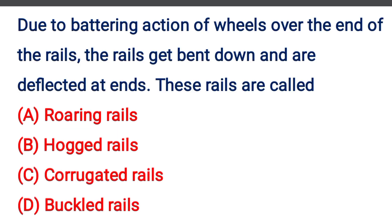Next question: Due to battering action of the wheel over the end of the rails, the rails get bent down and are deflected at ends. These rails are called — Option A: Roaring rails, Option B: Hogged rails, Option C: Corrugated rails, Option D: Buckled rails. The correct answer is Option B: Hogged rails.